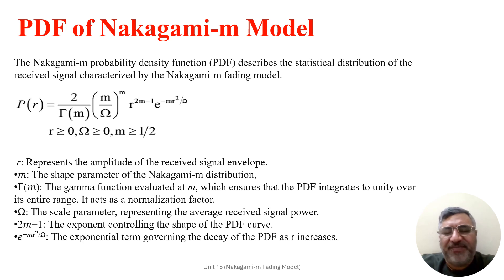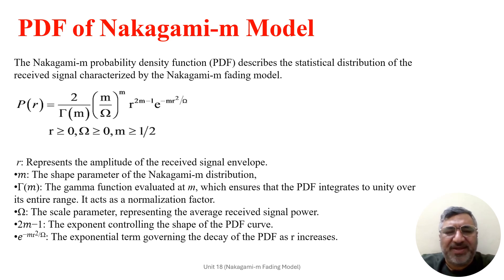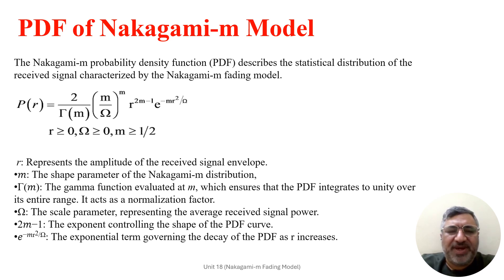M represents the shape factor of the Nakagami distribution, governing the severity of the fading. A high value of M indicates less severe fading, resulting in a more concentrated distribution of signal amplitude around the mean value. The gamma function ensures that the PDF integrates to unity over its entirety, acting as a normalizing factor. Omega is the scale parameter representing the average received signal power, determining the overall scale of the fading distribution. The exponent 2M minus 1 controls the shape of the PDF; higher values of M lead to sharper peaks around the mean while lower values result in broader distributions.